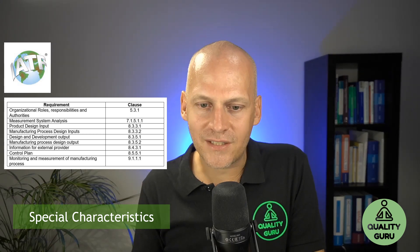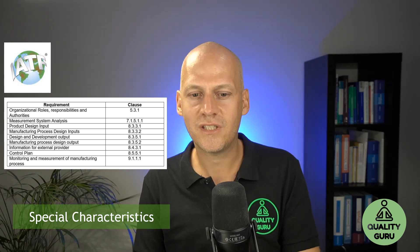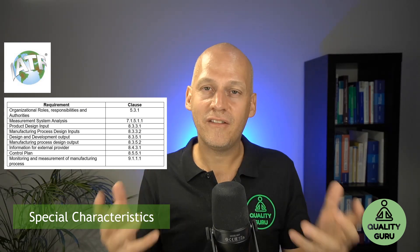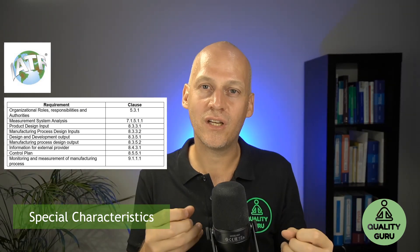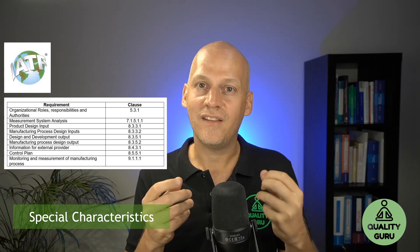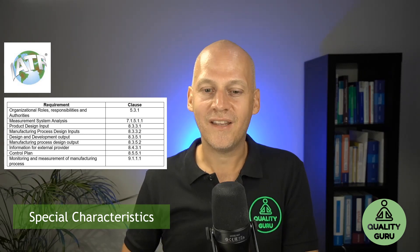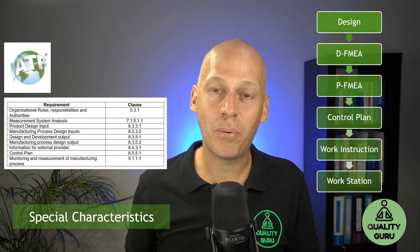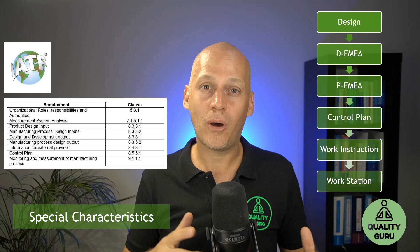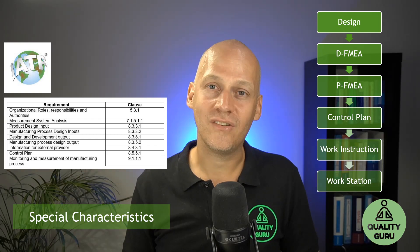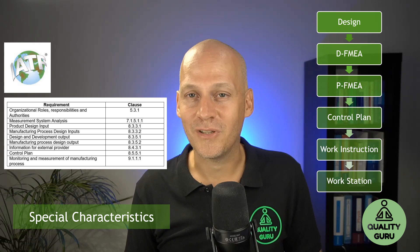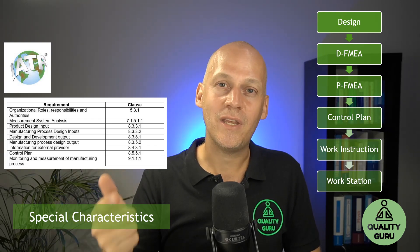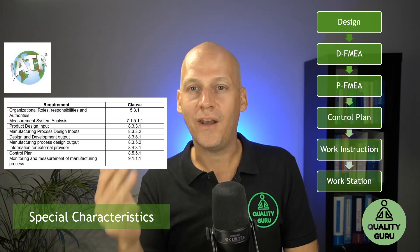Another reference: product design input, manufacturing process design inputs, design and development output. Here it is important that all customer-relevant information and requirements are taken into consideration, processed, and analyzed, and then at the end the SCs and CCs are properly assigned and taken into all documentation to communicate to the organization. You need to pay attention on an ongoing basis because the severity of these issues can put our customers at risk. It's very important to identify and highlight them in the drawing, in the DFMEA, in the process FMEA, in the control plan, and in the work instructions.